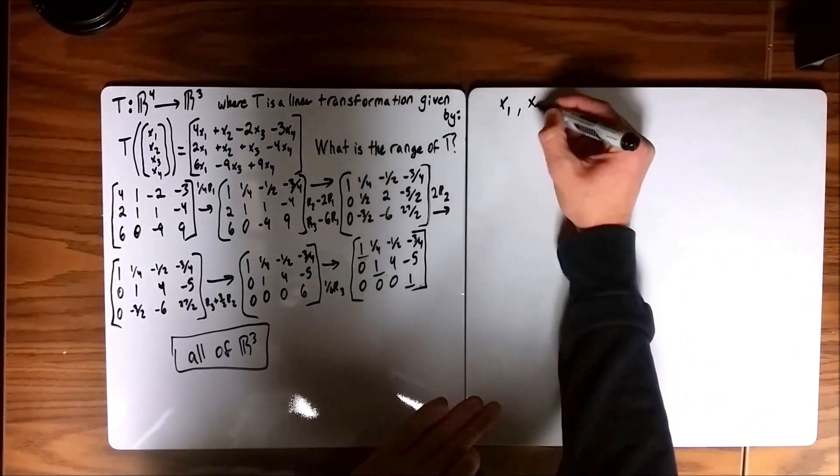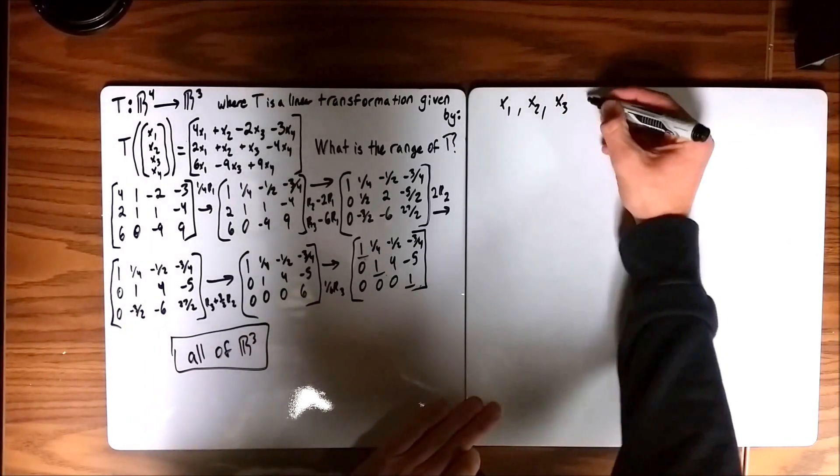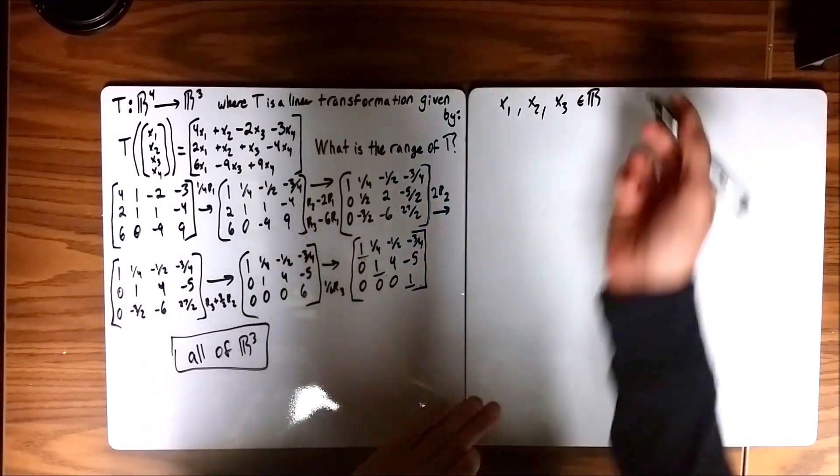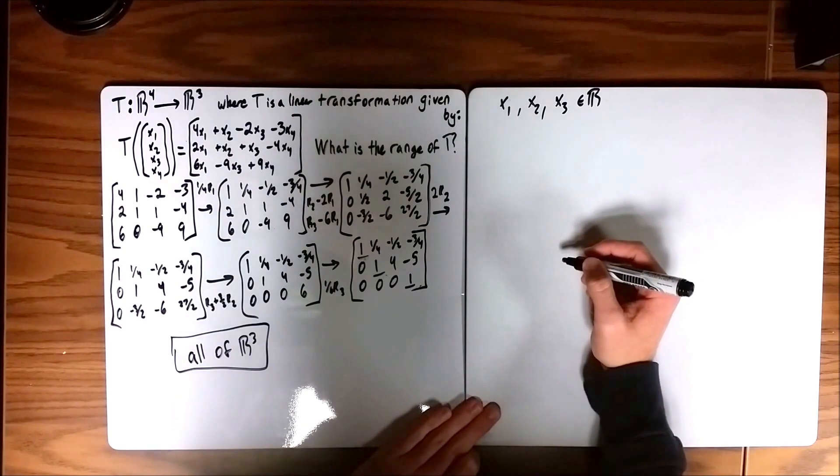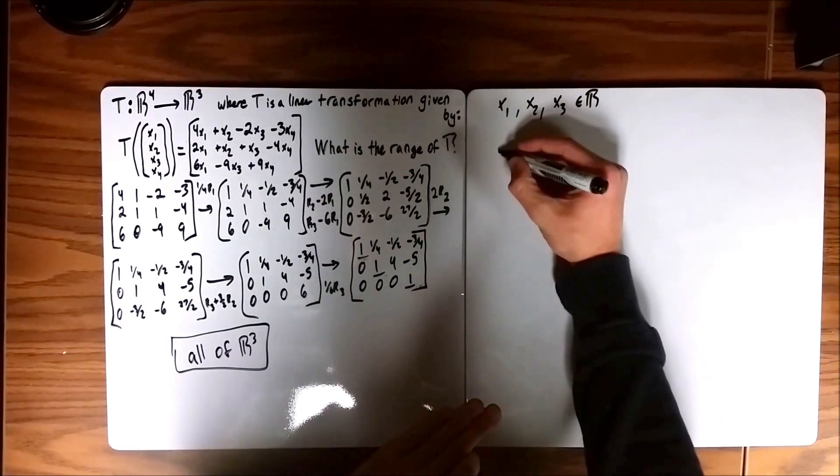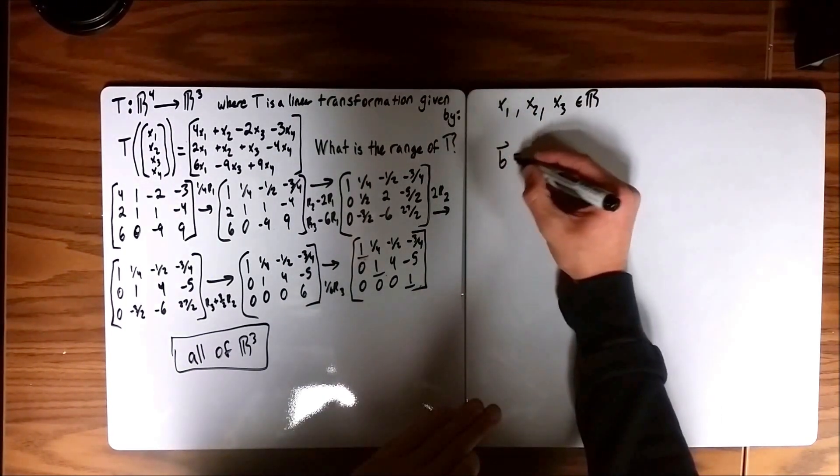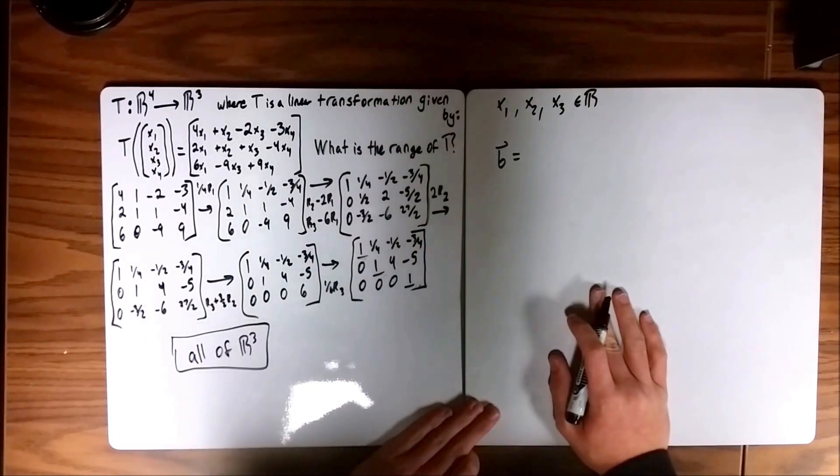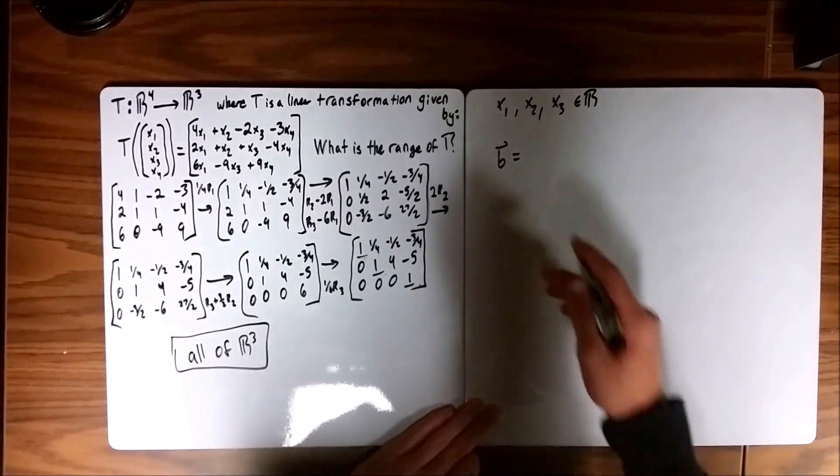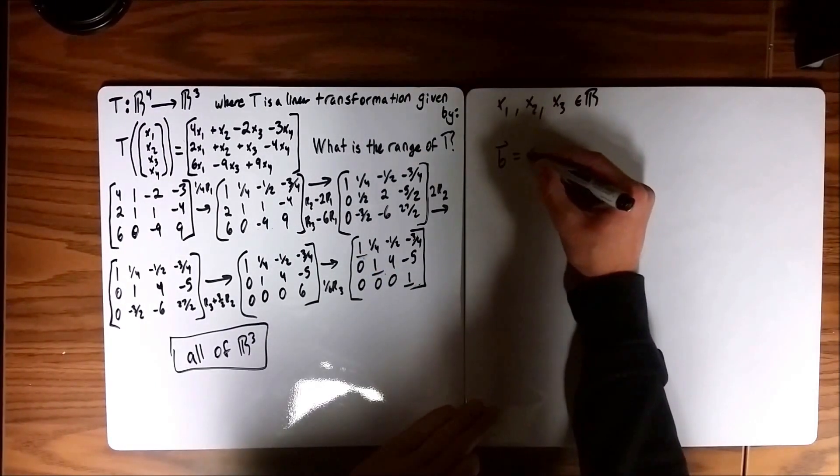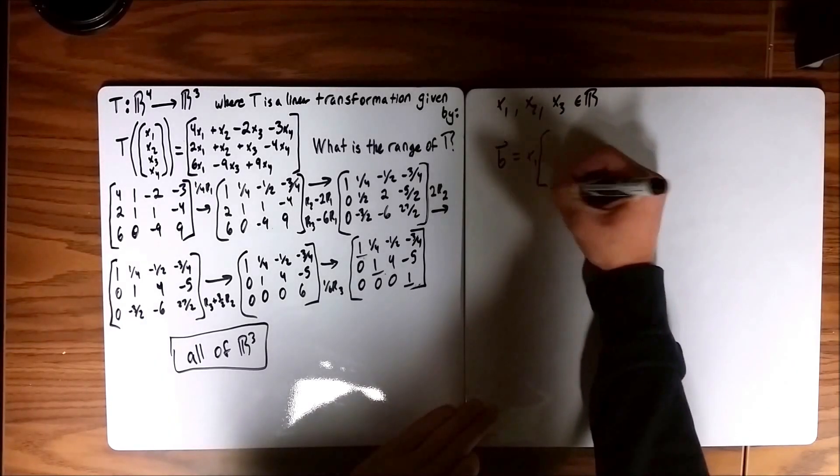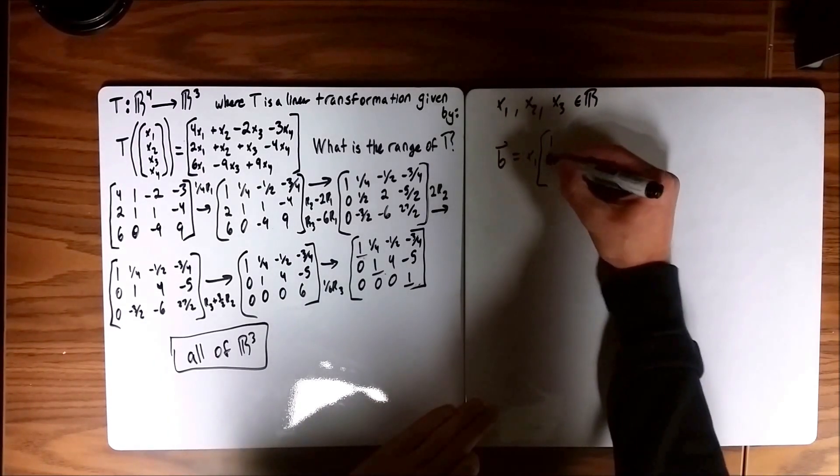And then we can also represent this with a set of vector equations where we have the variables X1, X2, and X3 that are all within the domain of all real numbers. And so we will write the vector B, which is some linearly dependent vector of the three vectors that we just found to be pivotal.